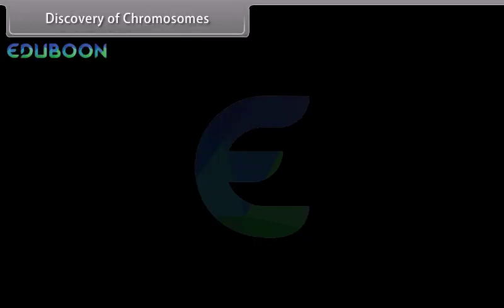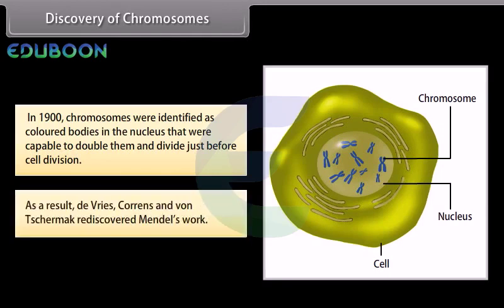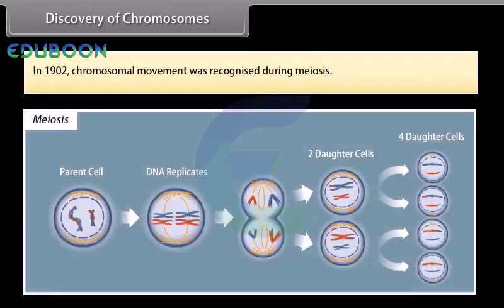In 1900, chromosomes were identified as colored bodies in the nucleus that were capable of doubling and dividing just before cell division. As a result, De Vries, Correns, and Von Tschermak rediscovered Mendel's work. In 1902, chromosomal movement was recognized during meiosis.